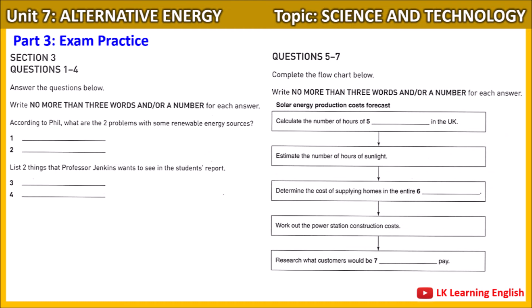How could we do that, Jackie? Well, I think we'd have to start by working out how many hours of daylight there are in the UK per year — the Meteorological Office would have data on that. Then estimate the number of hours of sun to get a rough total. And then we'd need to work out how much it would cost to supply the average home with solar power.